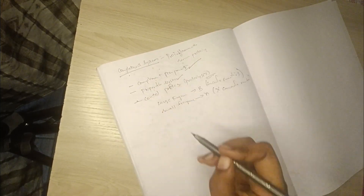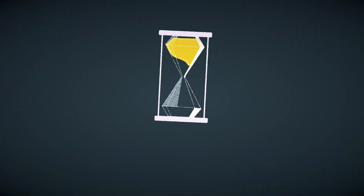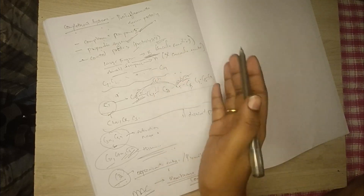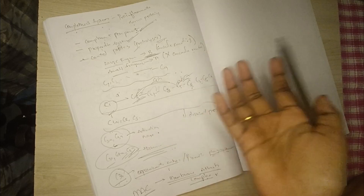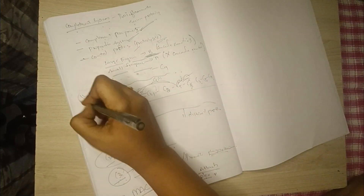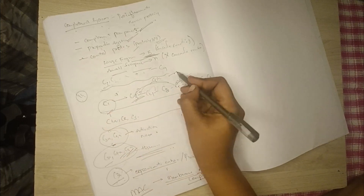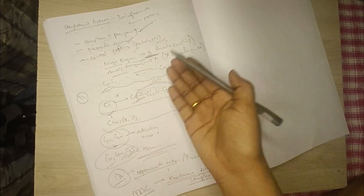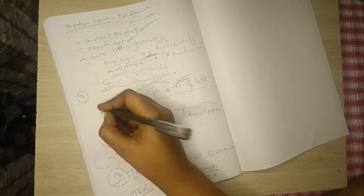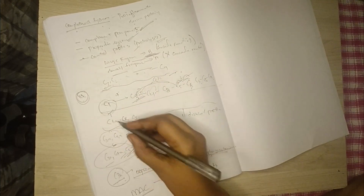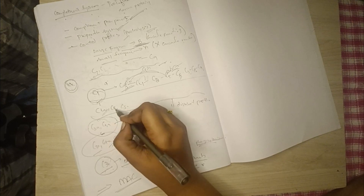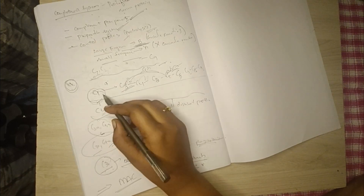The complement proteins number 11 distinct proteins, coming from C1 to C9. C1 itself has three forms: C1q, C1r, and C1s. So in sequence we have C1, C2, C3, C4, C5, C6, C7, C8, and C9, giving us 11 distinct proteins total.